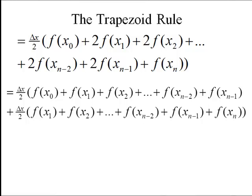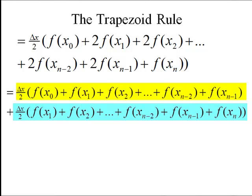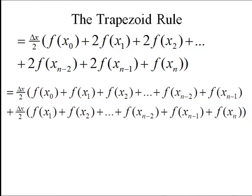And if you notice what I have on my top line, I have the left hand rule. What I have on the bottom line is the right hand rule, and both are getting multiplied by a half. So there's our average of the left hand rule and the right hand rule.